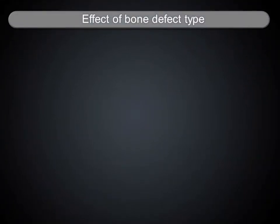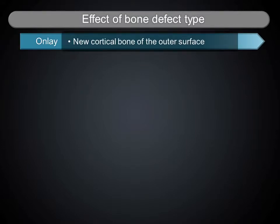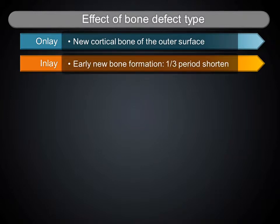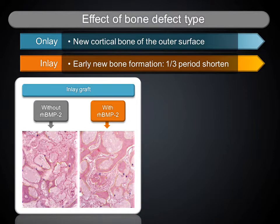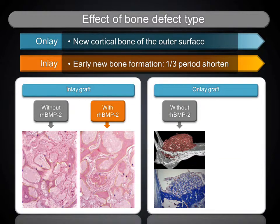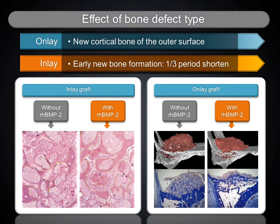The bone defect type in implantology is composed of inlay and onlay types. The inlay defect type has the advantage of easy healing due to blood vessels and osteoblasts supplied from the remaining bony walls and maxillary sinus. The onlay defect type has the disadvantage of delayed healing due to limited blood vessels from a single basal bony wall. Inlay bone grafts with RHBMP2-saturated particles examined at 8 weeks in rat mandibular inlay defects showed 3 times greater early bone formation compared to grafts without RHBMP2. This supports that conventional loading time for immediate implant placement in extraction sockets is better than delayed loading.